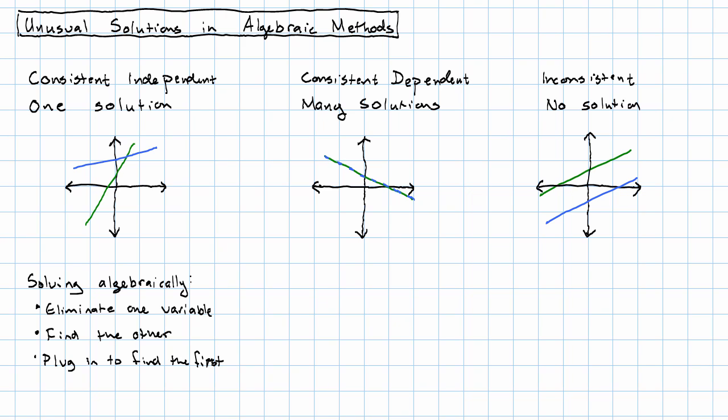When we solve a system that is consistent and independent algebraically, we find out the one solution. What happens if we have one of these other sorts of systems and try to solve it algebraically?